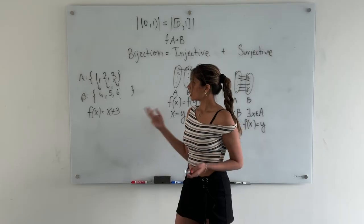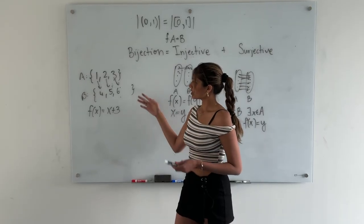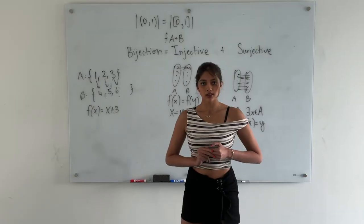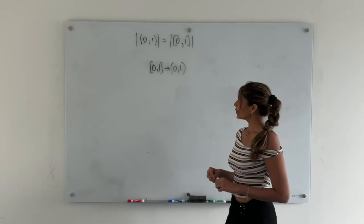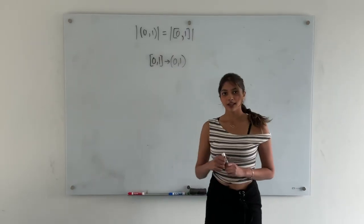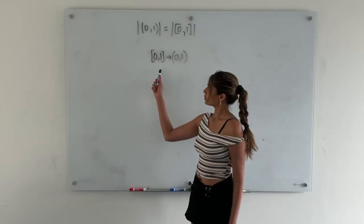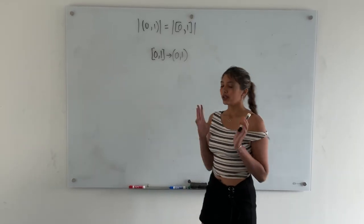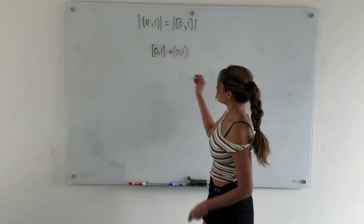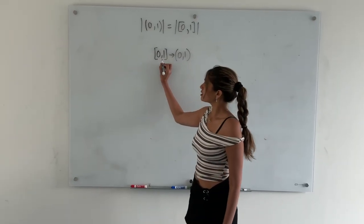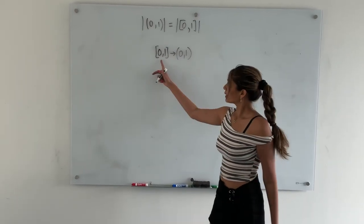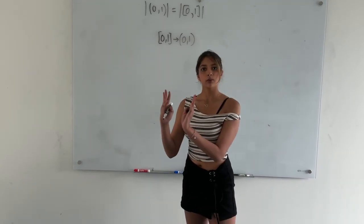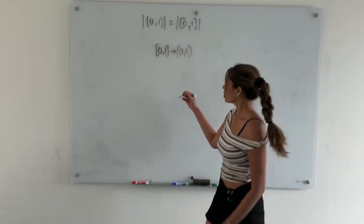Now, to prove that these two have the same cardinality, let's define a bijection from the closed interval [0, 1] to the open interval (0, 1). Since the closed interval has two extra elements — 0 and 1 — we need to make space for them and push things one step forward. We're going to define two sequences, a and b.